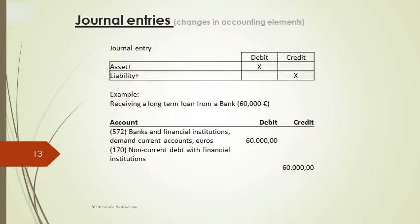Journal entries are the name for the annotations in the journal ledger. By them, we recognize and de-recognize different kinds of assets, liabilities and equity accounts. When changes in equity are the result of the recognition of income and expenses, we use income and expense accounts.